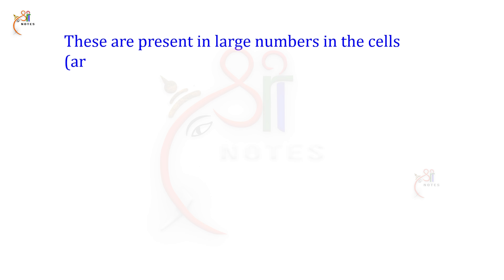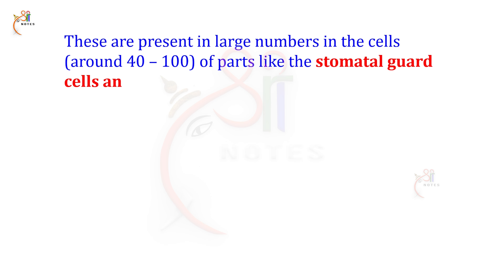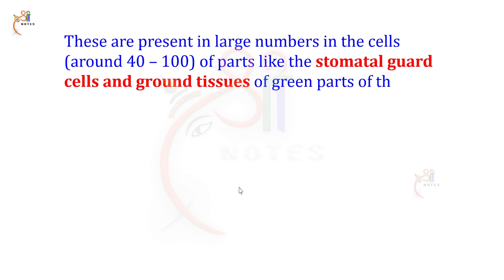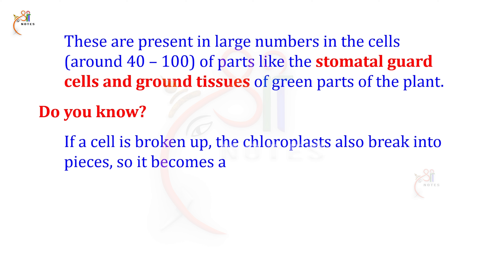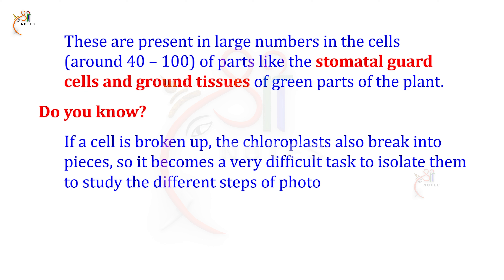These chloroplasts are present in large numbers in cells of parts like the stomatal guard cells and ground tissues of the green parts of the plant. However, if a cell is broken up, the chloroplasts also break into pieces, making it very difficult to isolate them to study the different steps of photosynthesis.